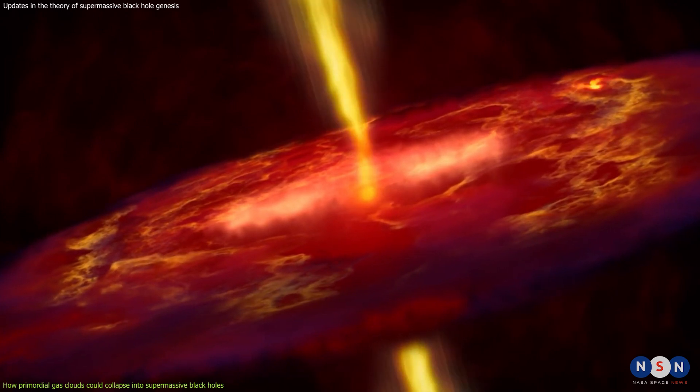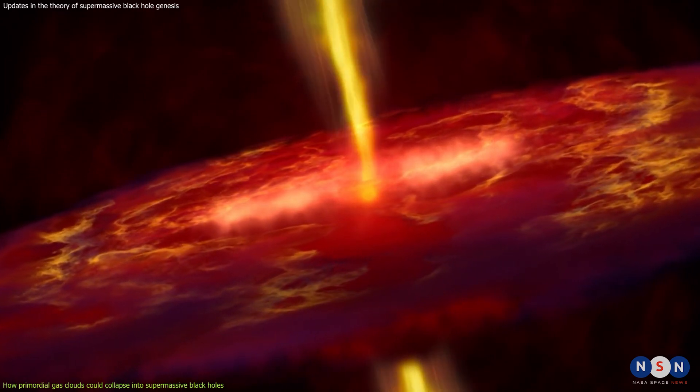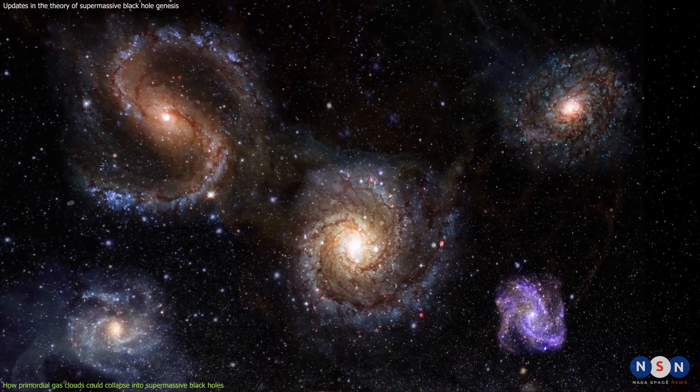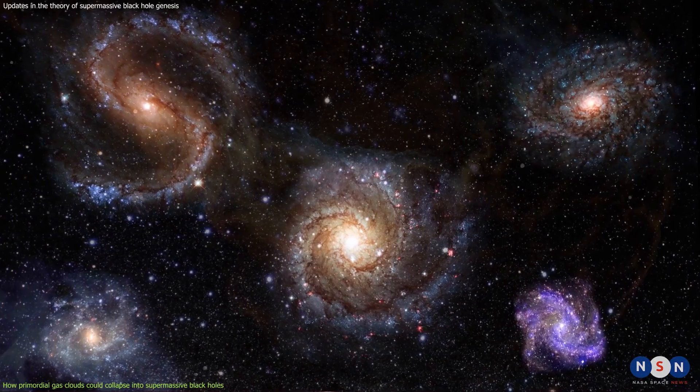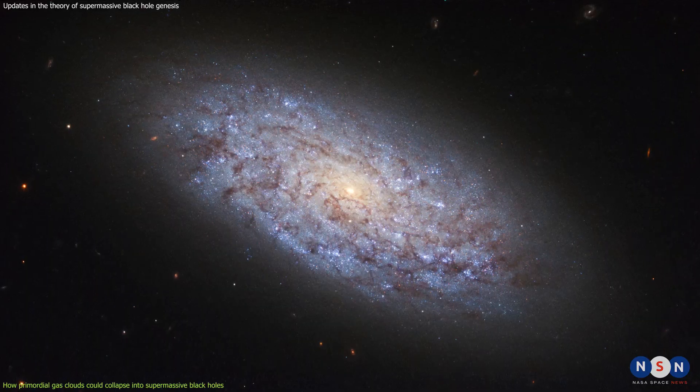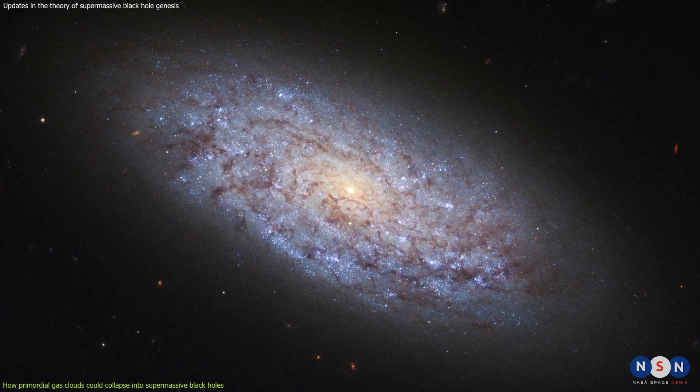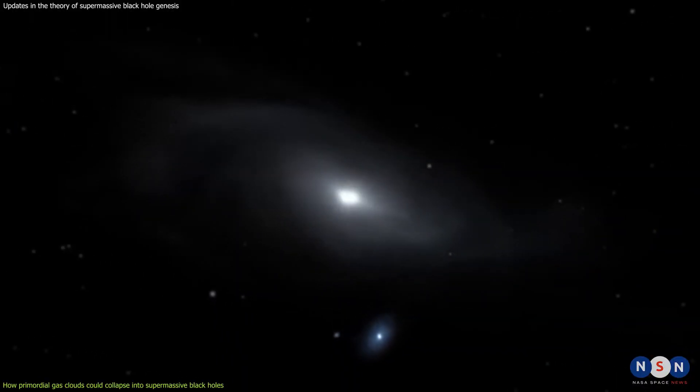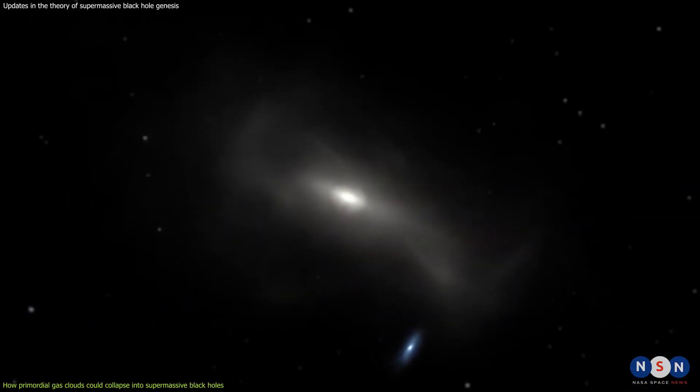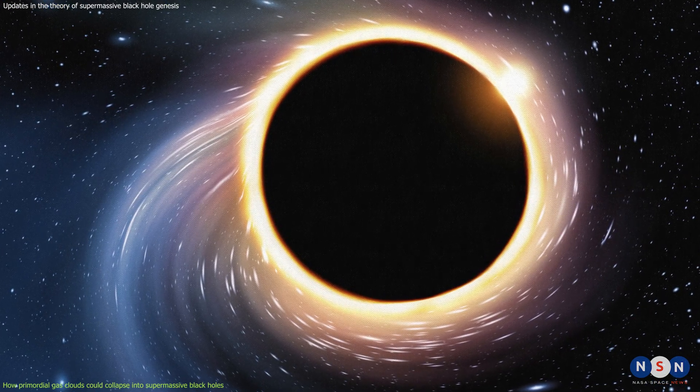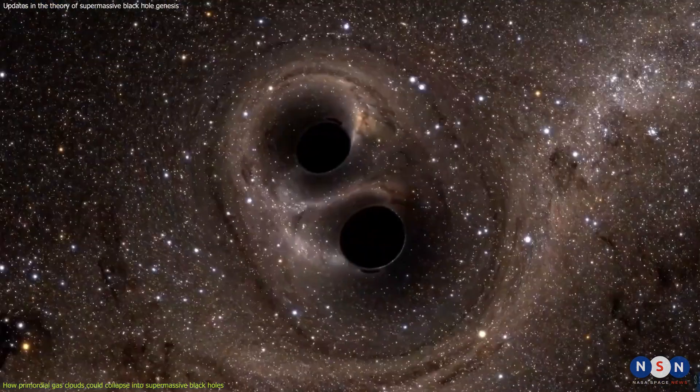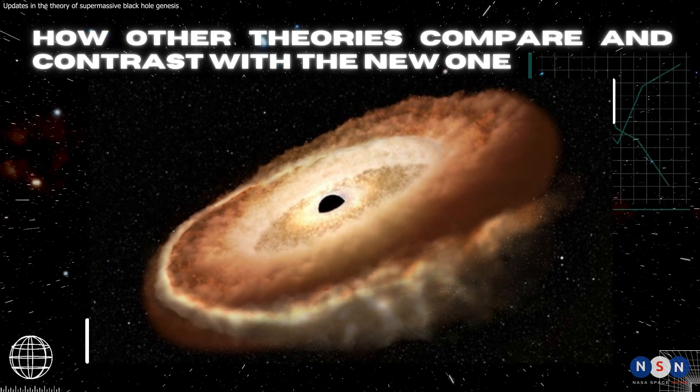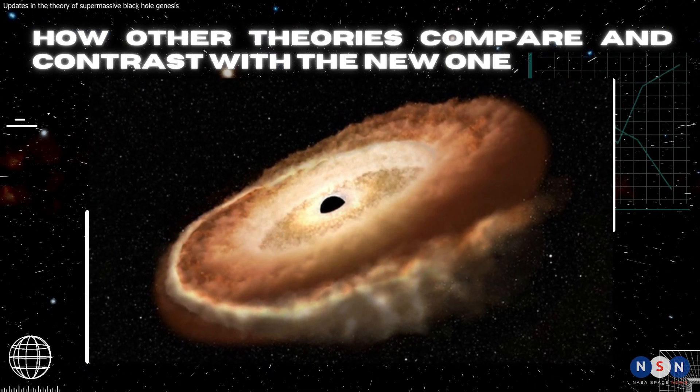The study also suggested that this mechanism could produce supermassive black holes in different types of galaxies depending on the environment and the history of the gas clouds. For example, some supermassive black holes could form in isolated dwarf galaxies, while others could form in massive galaxies that experienced mergers or interactions with other galaxies. This could explain why some supermassive black holes are more massive than their host galaxies and why some galaxies have more than one supermassive black hole at their centers.